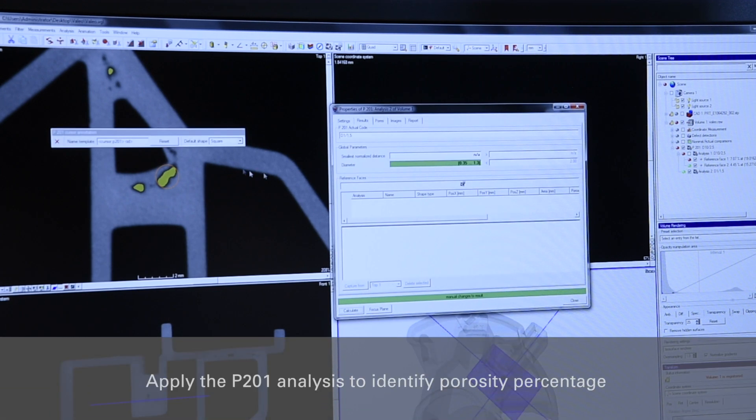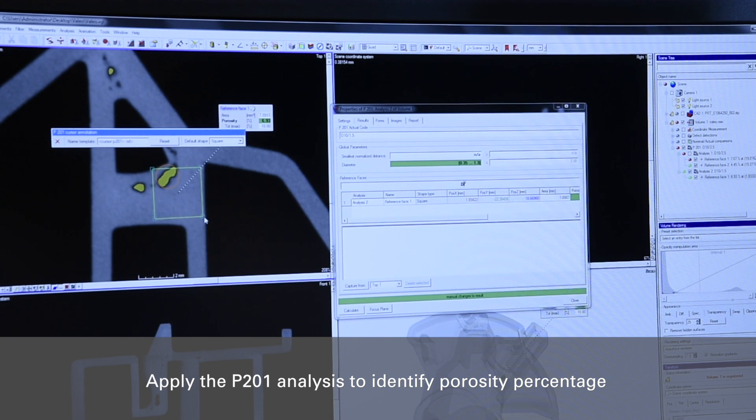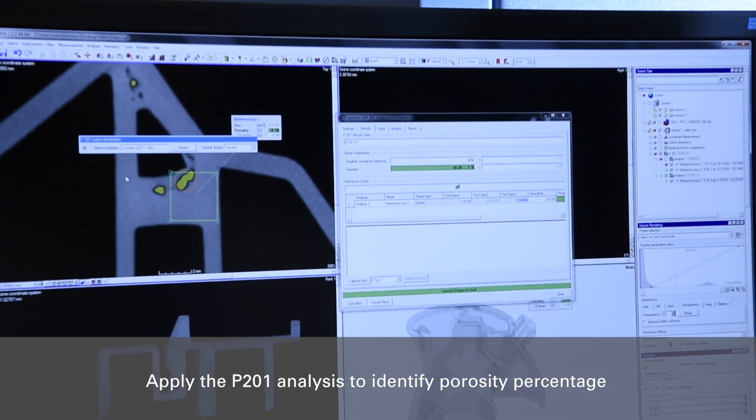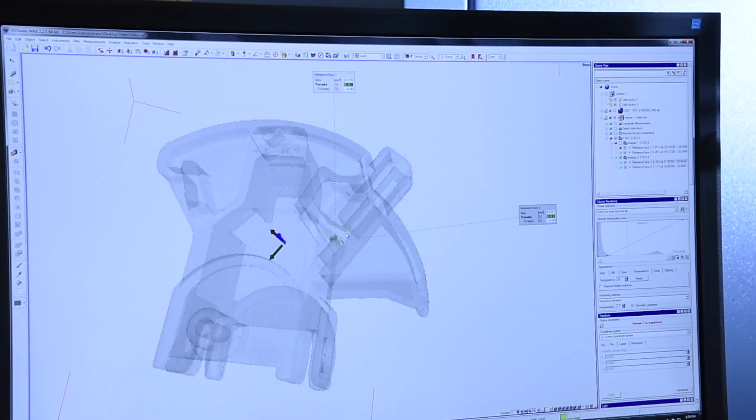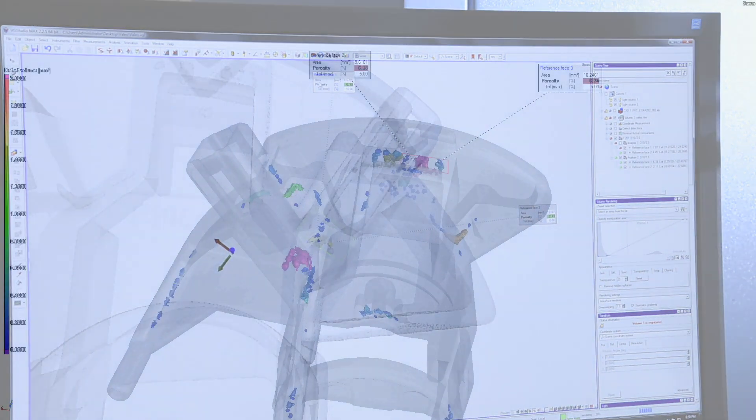The P201 analysis is a directive of the authoritative German Casting Organization. With P201, you can test the percentage of porosity in specific structural areas of an inspected item. This enables you to evaluate voids in areas at risk of cracking.